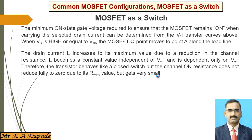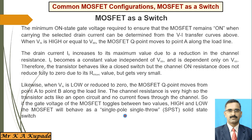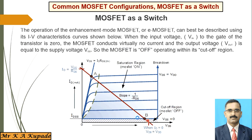When Vin is low or reduced to zero, the MOSFET Q-point moves from point A to point B along the load line. Initially, when the gate voltage is high, the current is at its maximum. But whenever VGS becomes low or zero, the Q-point moves from A to B, and in this position the MOSFET turns off. The channel resistance again becomes very high.